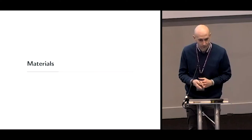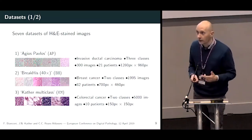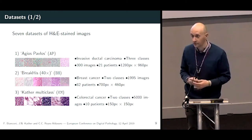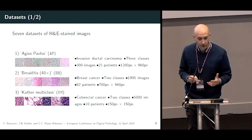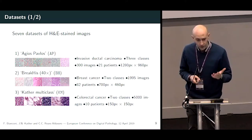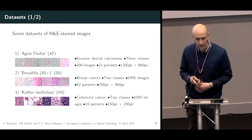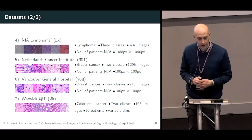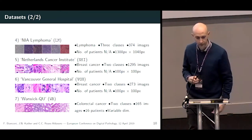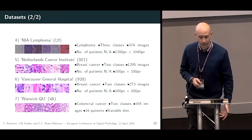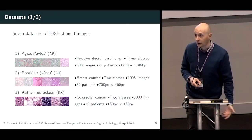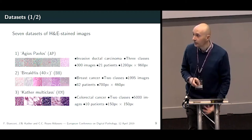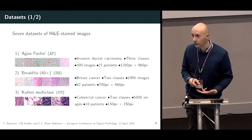For this work we used seven different datasets of H&E stain images. The datasets feature different types of tissue: we have ACIOS/PAVIOS invasive ductal carcinoma, breast cancer, multiclass colorectal cancer, NIA lymphoma with three different classes, then again two breast cancer datasets, and one last colorectal cancer dataset. The datasets are quite different in number of patients, number of samples per class, and resolution of images.